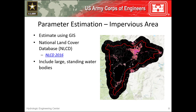And finally, when estimating a percent pervious area, it's okay to use a GIS source like the National Land Cover Database. You should also include large standing water bodies in these estimates, as rain falling directly onto a large lake or reservoir should not be subject to infiltration. In this image, percent impervious cover from the NLCD 2016 version is shown. Black areas indicate little to no impervious cover, while magenta areas indicate high degrees of impervious cover.